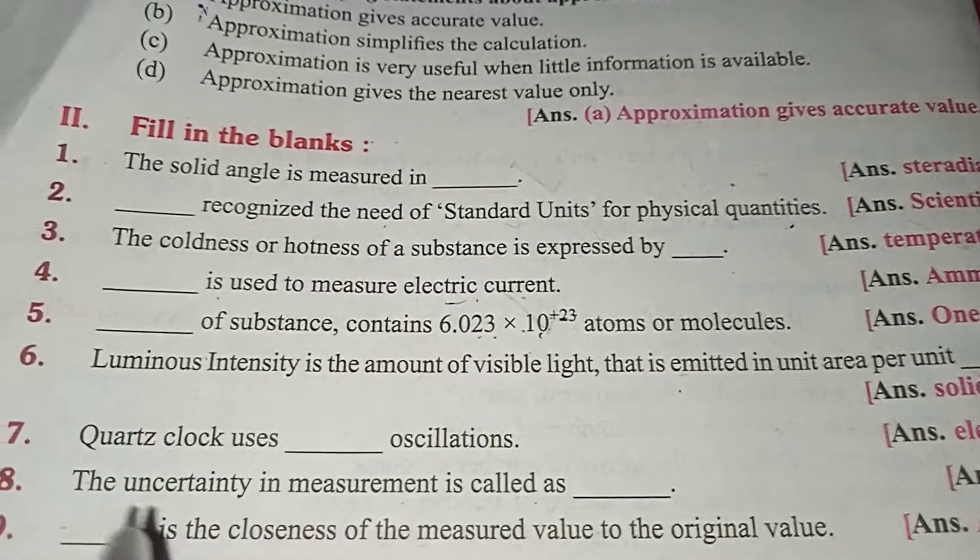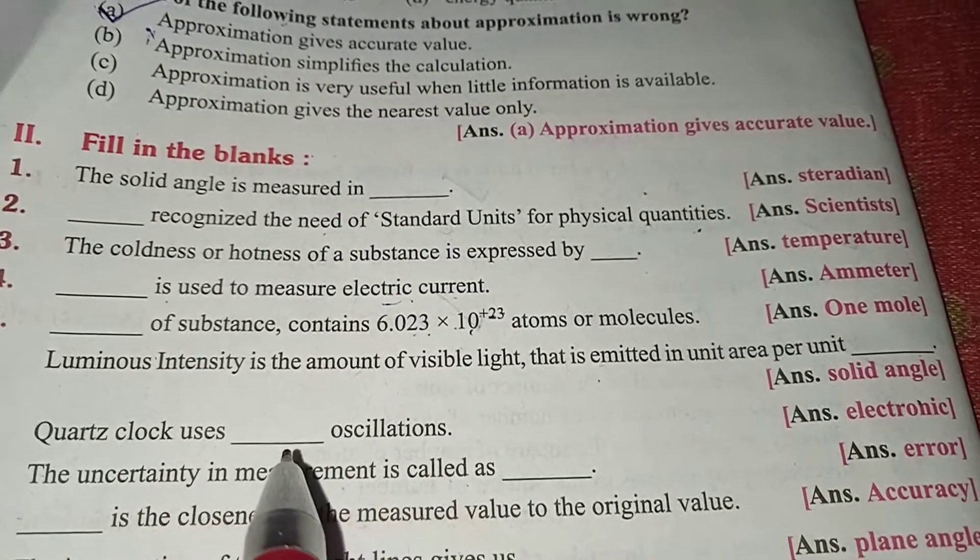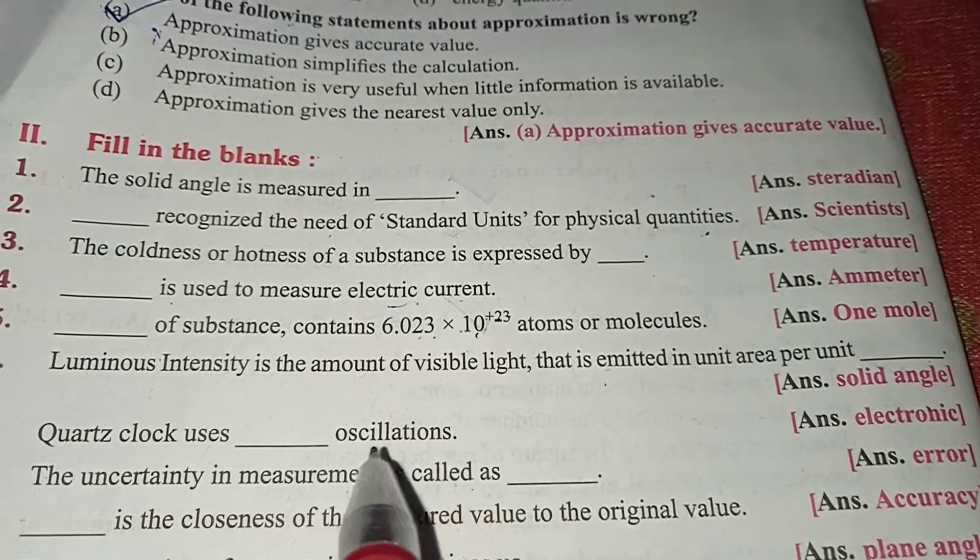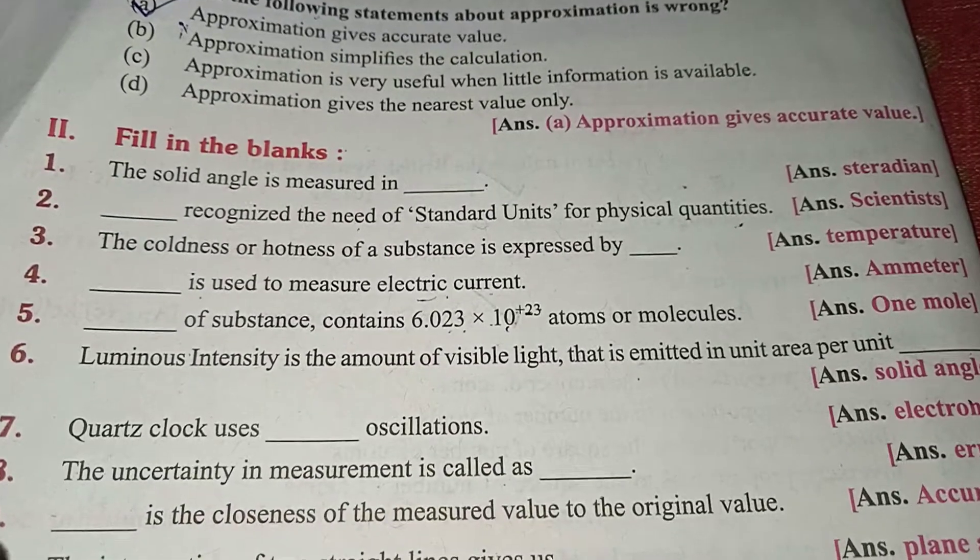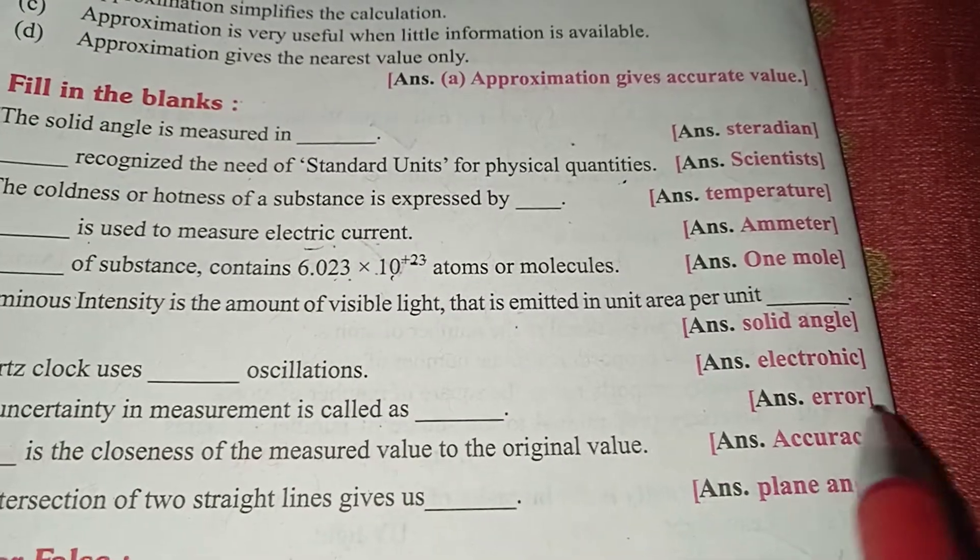Quartz clock uses electronic oscillation. The uncertainty in the measurement is called error.